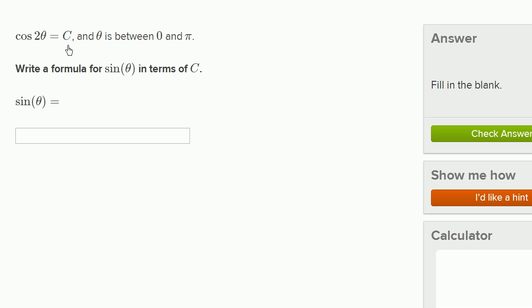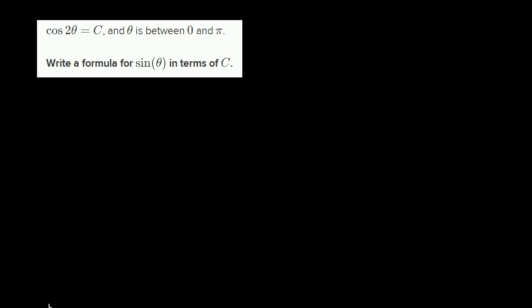Cosine of two theta is equal to c, and theta is between zero and pi. Write a formula for sine of theta in terms of c. I encourage you to pause the video and try to figure this out on your own before I work through it. So I'm assuming you've had a go, let's see if we can work through it together. I'm going to get my scratch pad out.